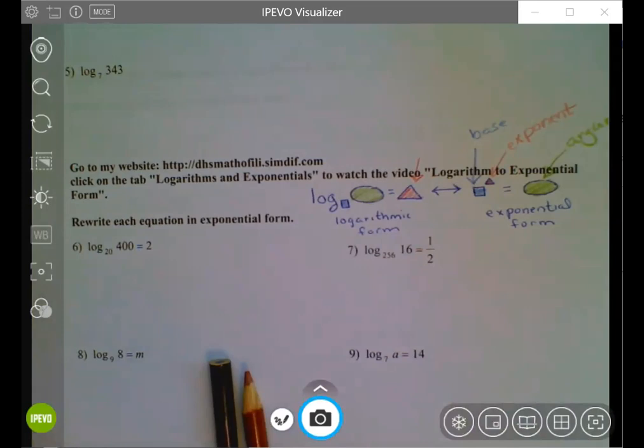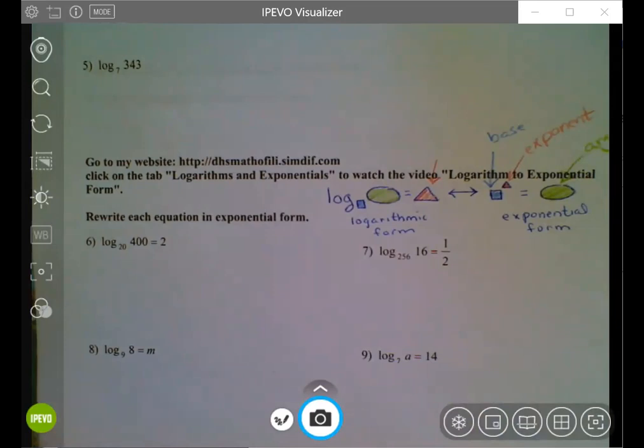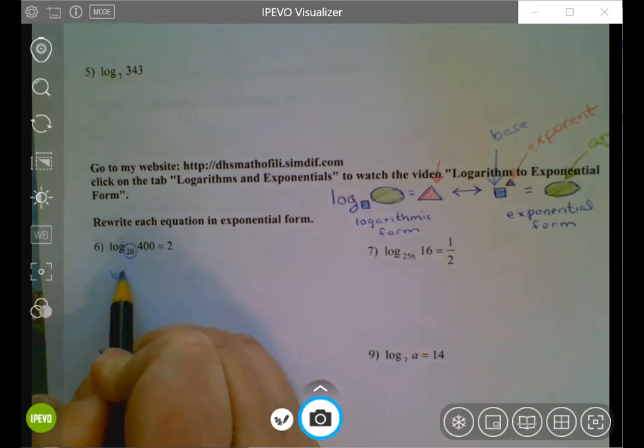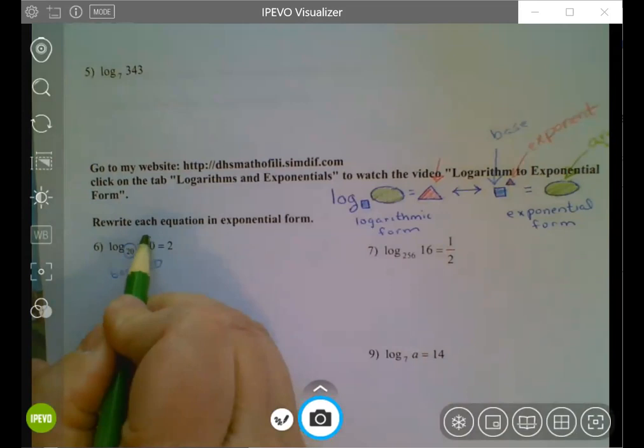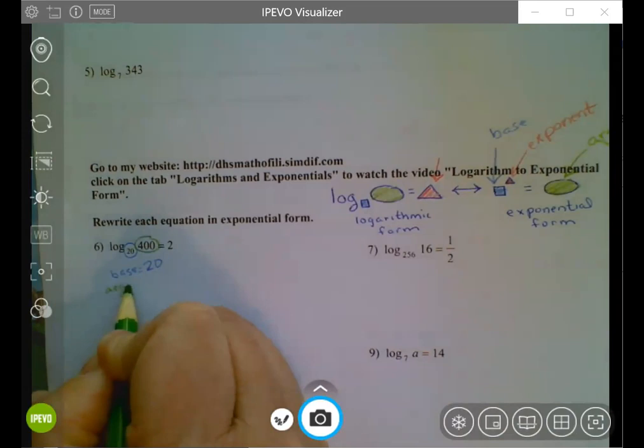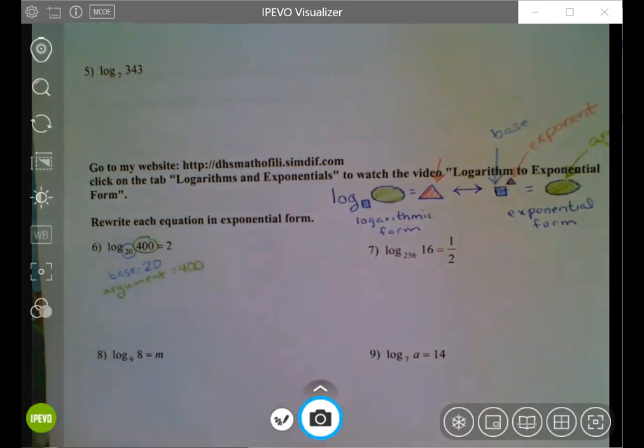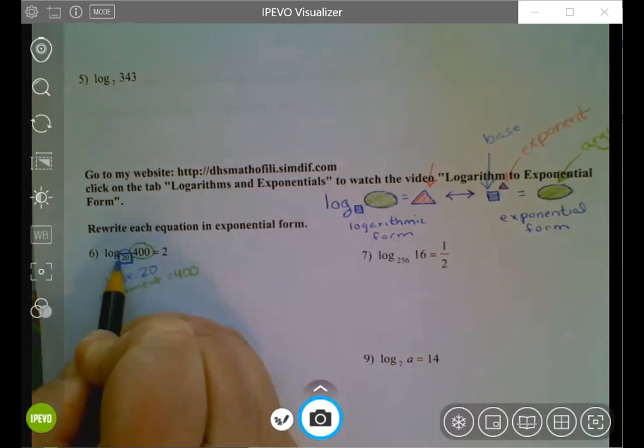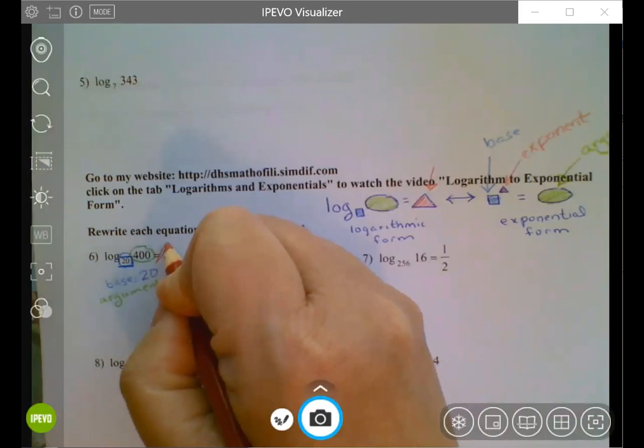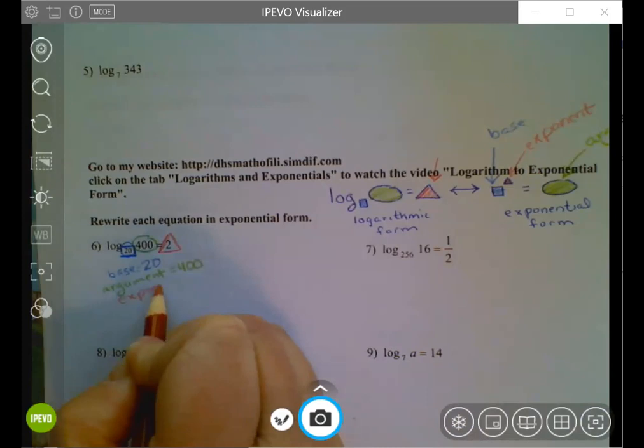So we're going to identify which parts are which and just rearrange them. So looking at number six, the base is 20. The argument is 400. And really to stick with my visual over here, I should have made this be a little box around the 20. All right, and my answer to the logarithm I know is going to be the exponent in exponential form. So my exponent is 2.